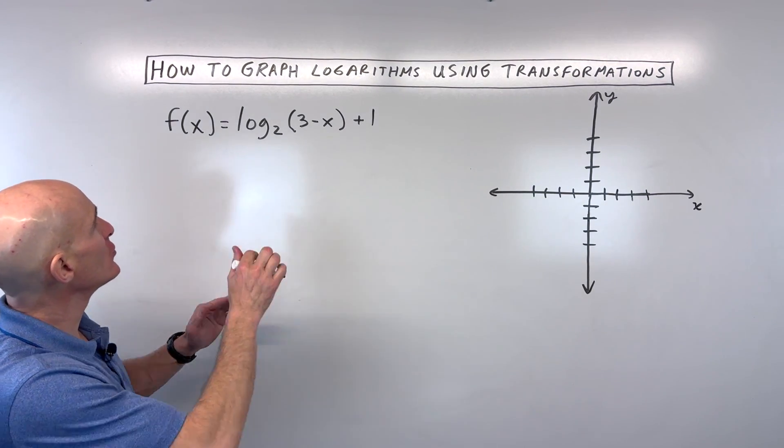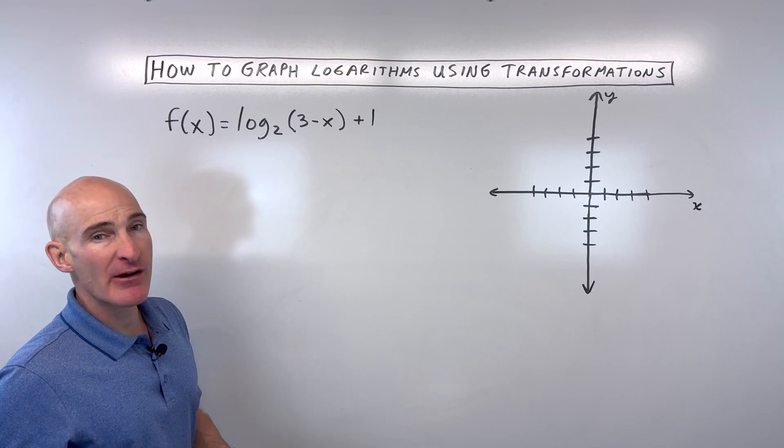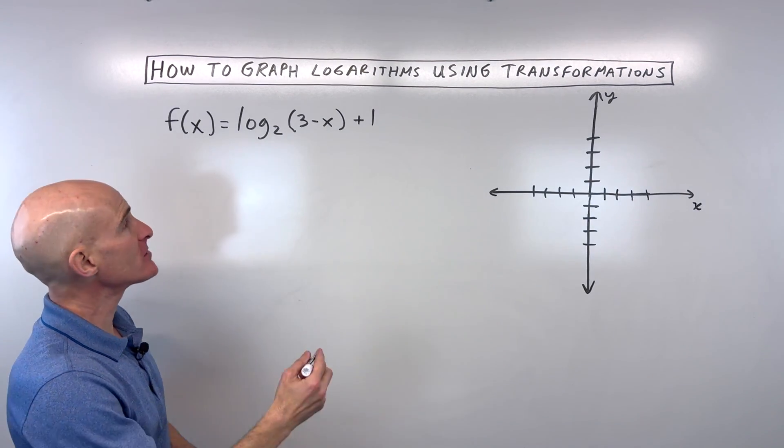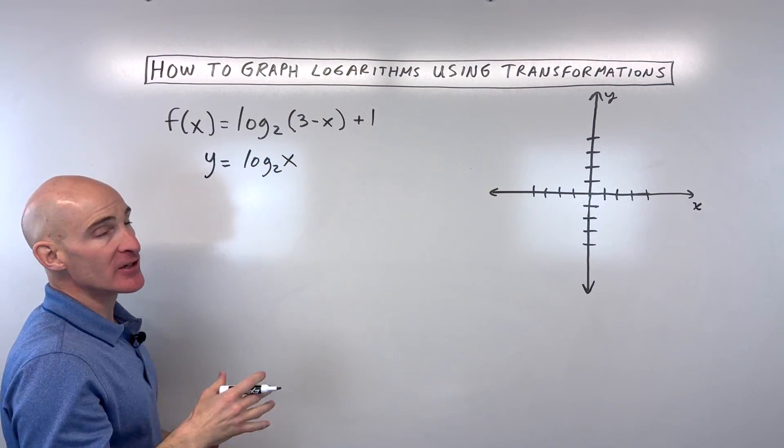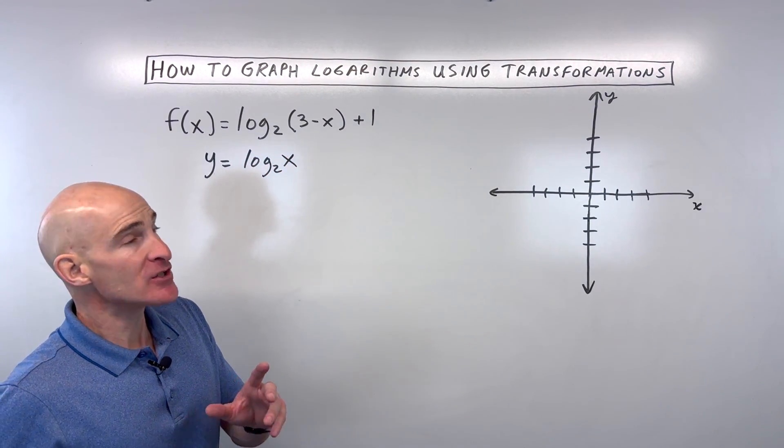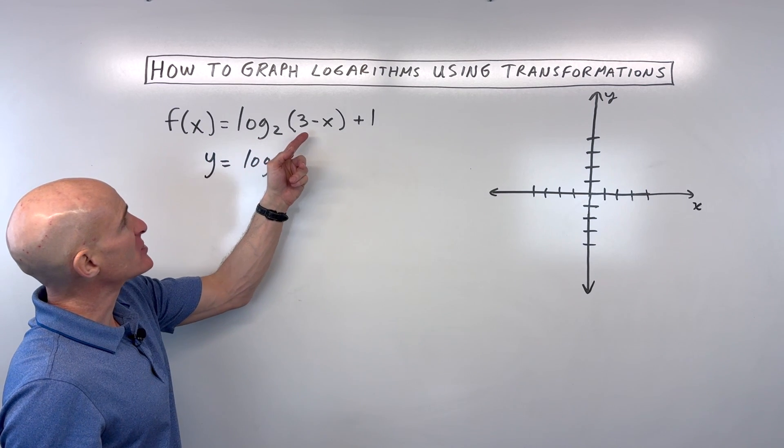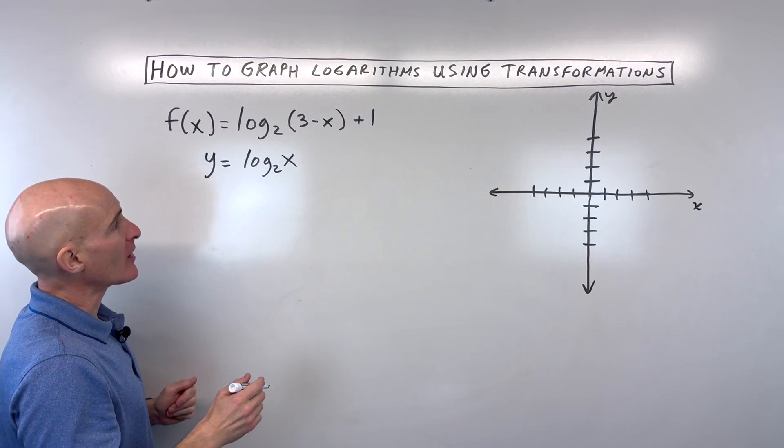So the first thing you want to do when we're graphing this is look at our parent function. What's our parent function? It's basically like our core equation before we did all of the transformations. So you can see this is y equals log base 2 of x. That's our basic graph here.